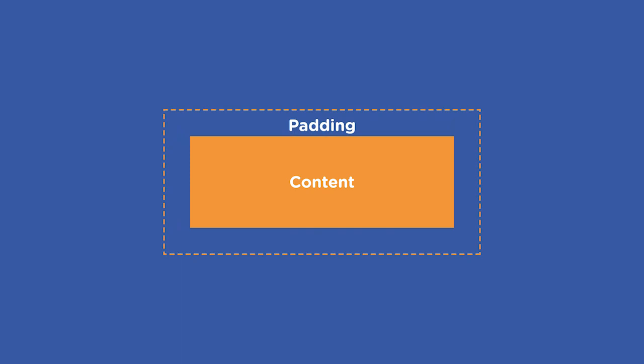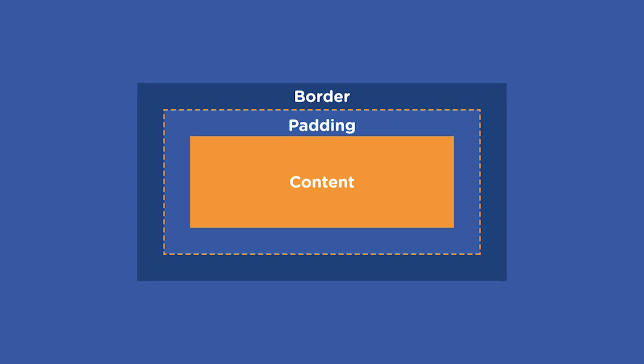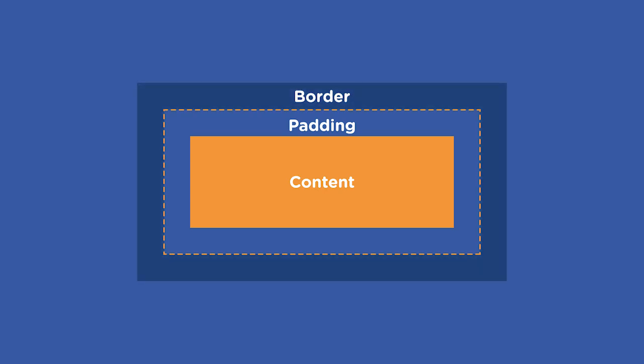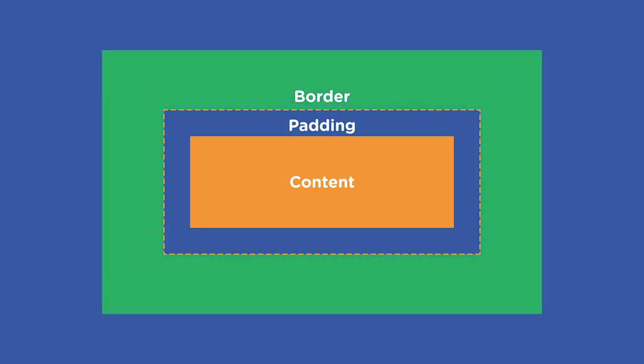The border area of the box is the outermost part of the box. You can think of it as giving the rectangular box an outline. Borders tend to be hidden on most CSS elements by default, but once visible, different styles like color and thickness can be applied to them.